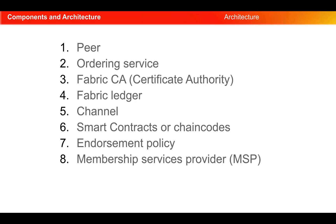These are the components that the Hyperledger Fabric framework is made of. They are: Peer, Ordering Service, Fabric Certification Authority, Fabric Ledger, Fabric Channel, Smart Contracts or Chaincode, Endorsement Policies, and MSP or Membership Service Providers.